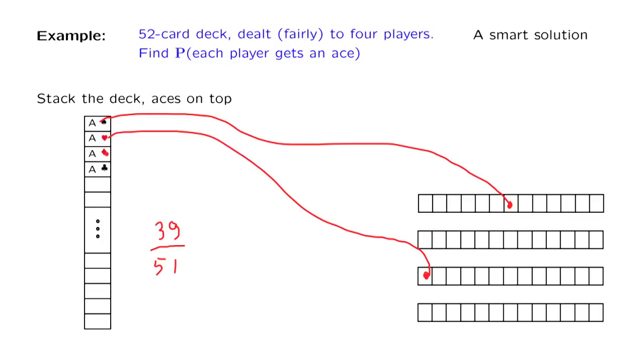Now let us consider this ace. What is the probability that this ace will get into a slot which belongs to either this person or that person? It has 26 slots in which this desired event is going to happen, and it's 26 out of the 50 available slots.